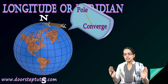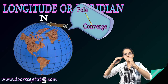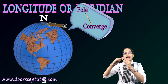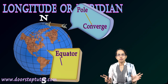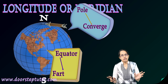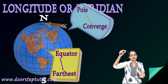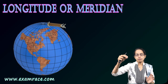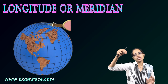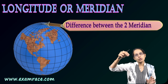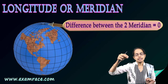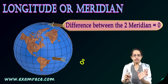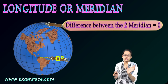These meridians join towards the pole and they are closest near the pole. When I say closest near the pole, that means the difference between the two meridians is zero. However, at the equator, the distance is maximum.